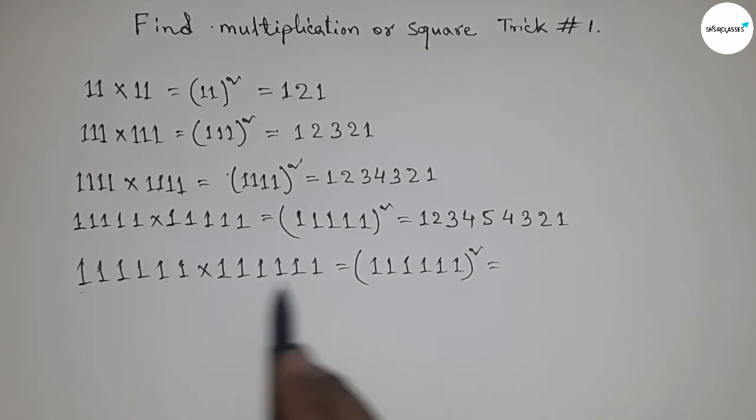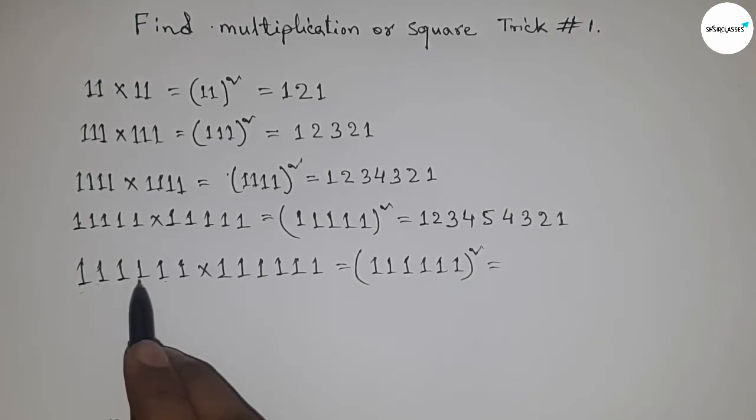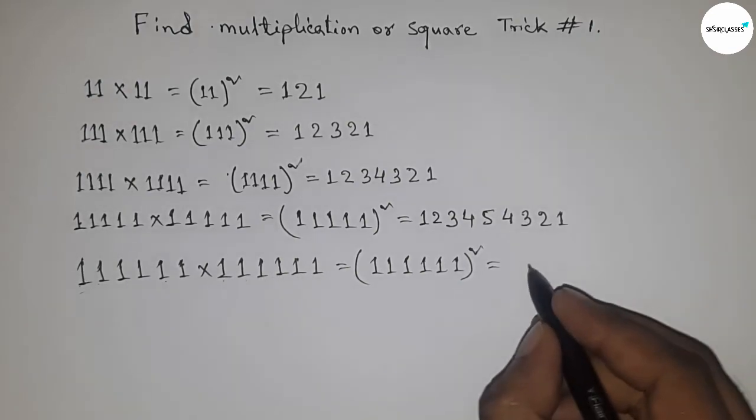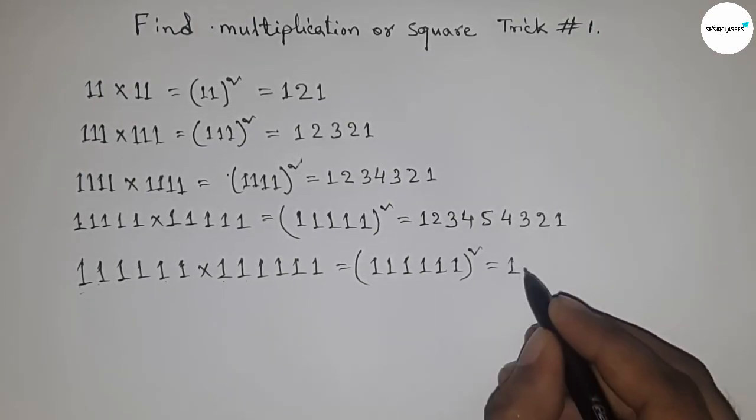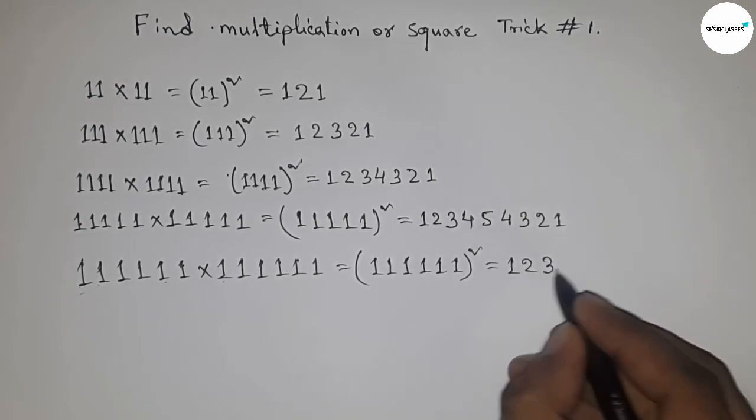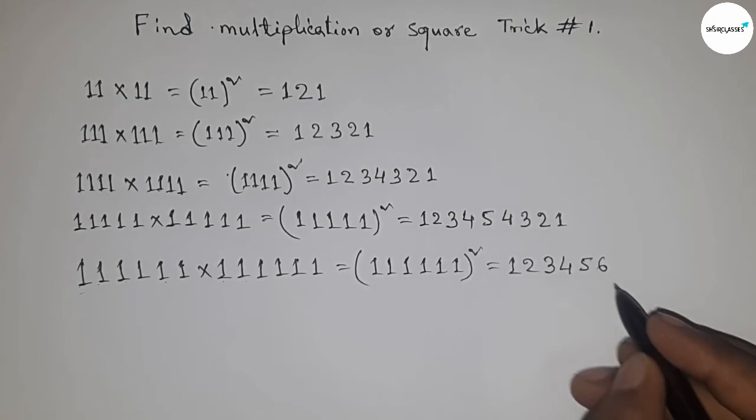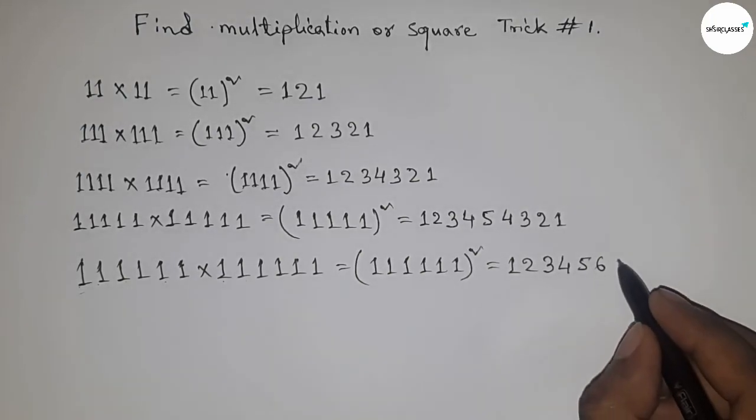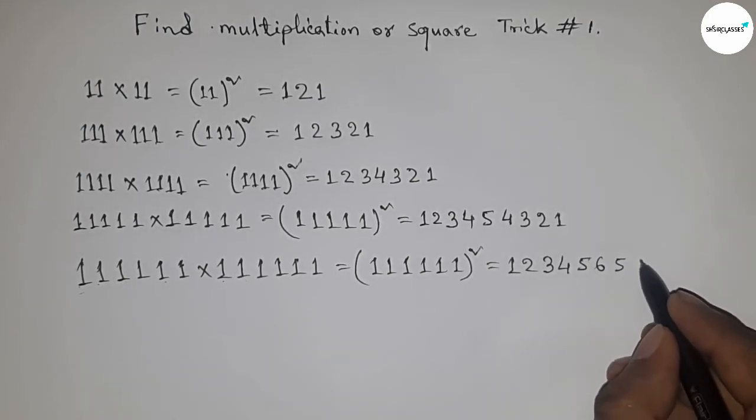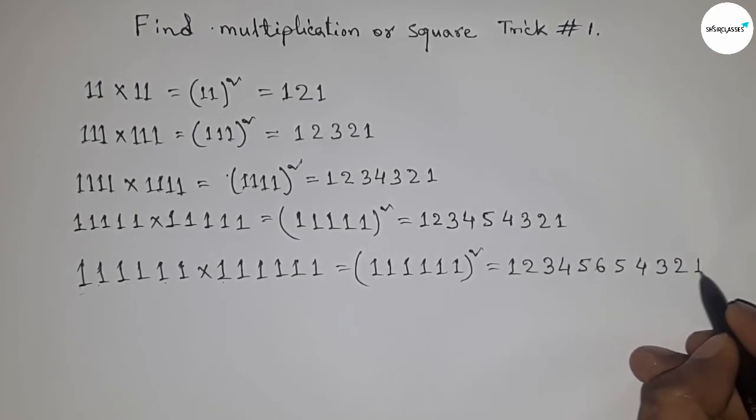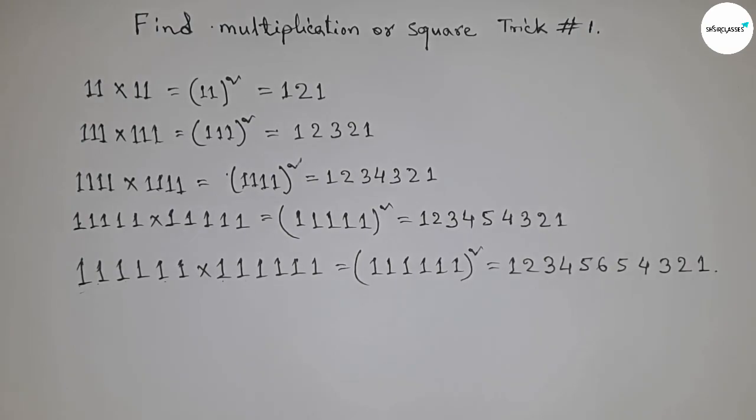Here, multiplying six ones with six ones. So first write 1, 2, 3, 4, 5, 6, then reversely 5, 4, 3, 2, 1. That's all.